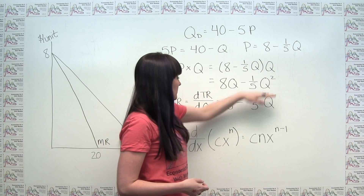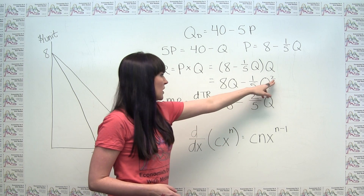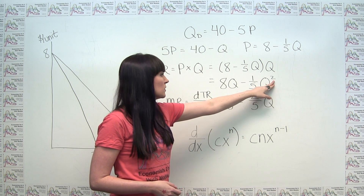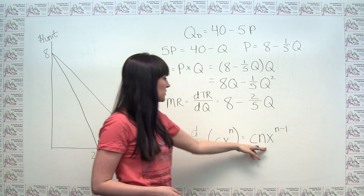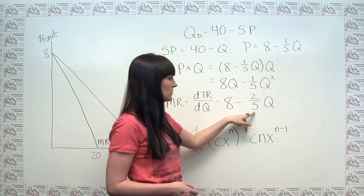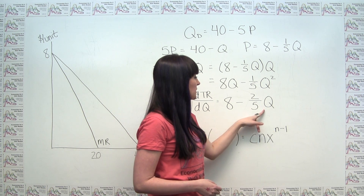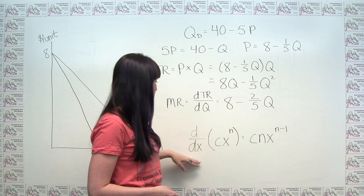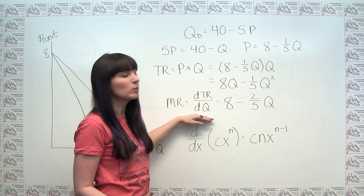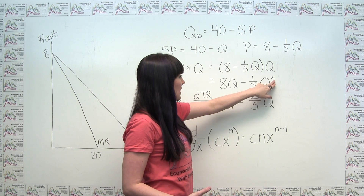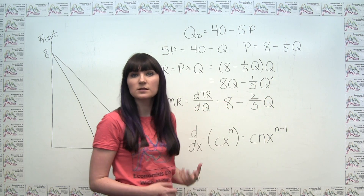For the Q squared term, our c is one-fifth and our n is 2. We bring the 2 down in front so that our total coefficient is 2 times one-fifth, or two-fifths. Then our new exponent on Q — since Q is the variable we're differentiating with respect to — decreases by one, going from Q squared to Q to the first, which is just Q.